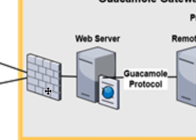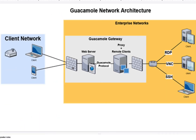The reason we're creating this video today is to ask the question: what if you wanted to stand up Guacamole and have it, on its backside, access remote Windows 2019 server machines, but not open any ports to the internet while simultaneously allowing anyone out there to access those remote Windows boxes? How would we do that?